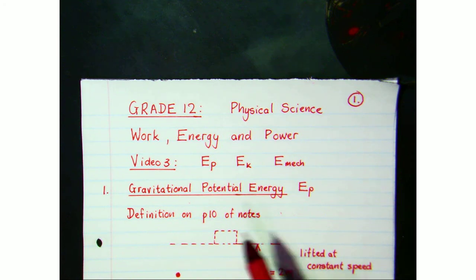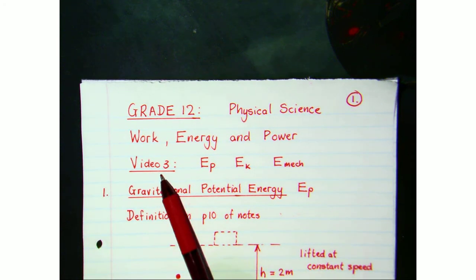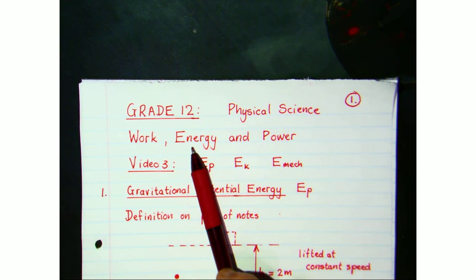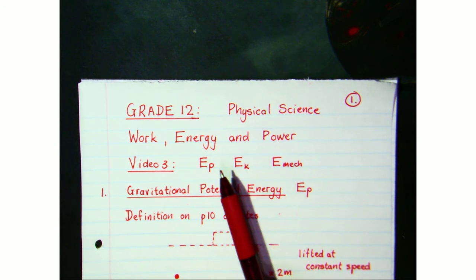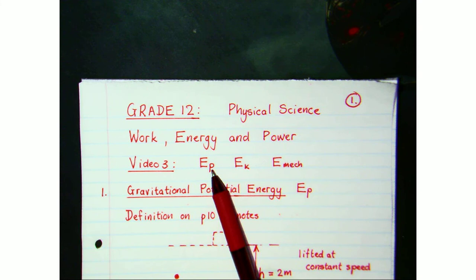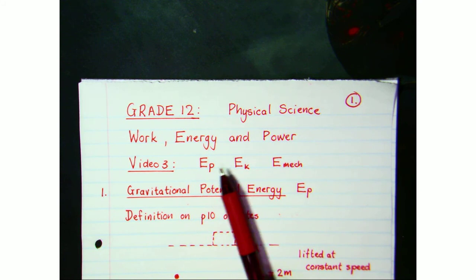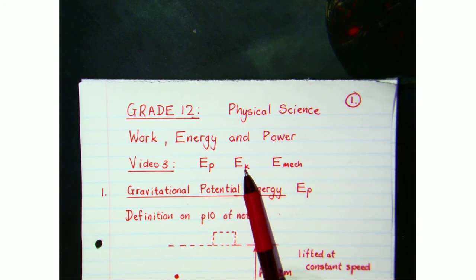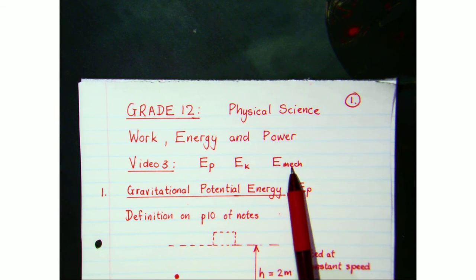This is the third video on the Grade 12 chapter on Work, Energy and Power. Today in this short video we'll be looking at gravitational potential energy of an object, the kinetic energy of an object, and the total mechanical energy of an object.